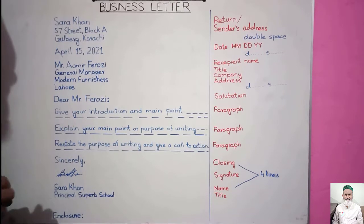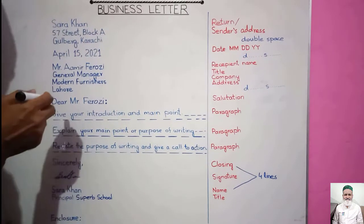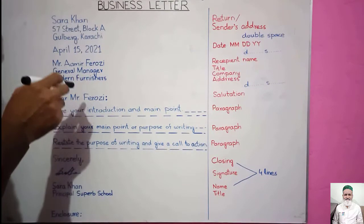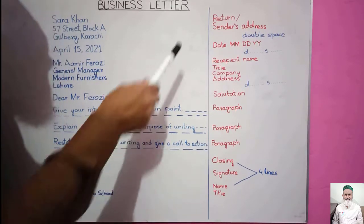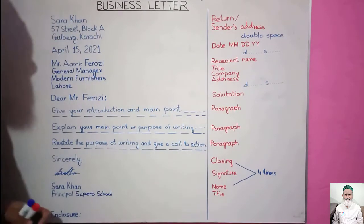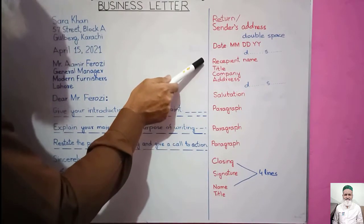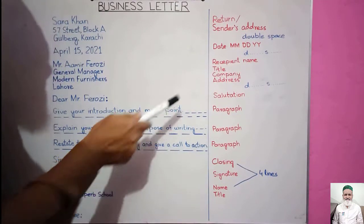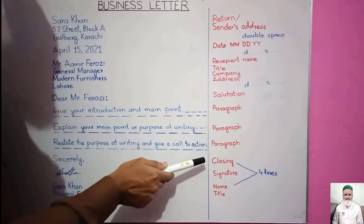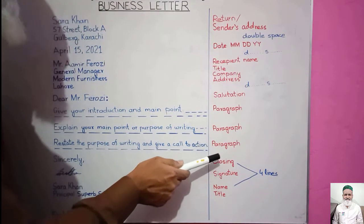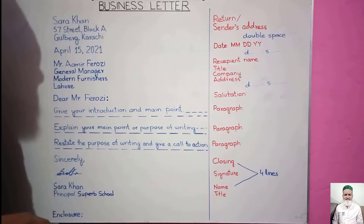Today we have a business letter example. A business letter has a Sender's address, followed by the date. After the date, we write the Recipient's name, title, company, and address. After the recipient section comes the Salutation, followed by paragraphs one, two, and three. Normally a business letter consists of three paragraphs. After the third paragraph, there is the closing, followed by the signature, and below the signature is the writer's name and title.